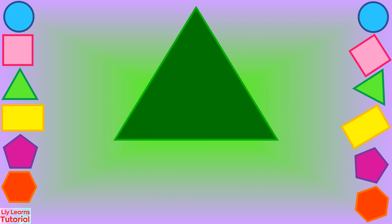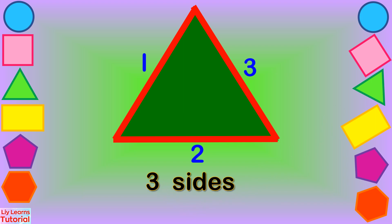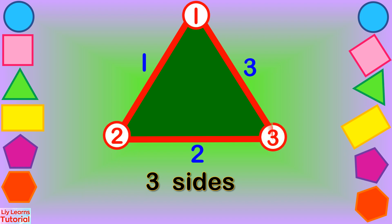Let's count the sides: one, two, three — three sides. Let's count the corners: one, two, three — three corners.